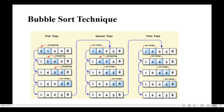Let's see an example. Here we have an array — our data structure with five elements: 5, 1, 4, 2, 8. How will bubble sort work? First, it will compare the first element with the second element — that is, the neighboring element.